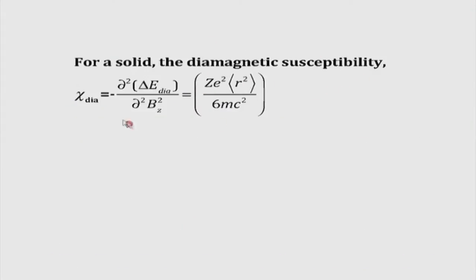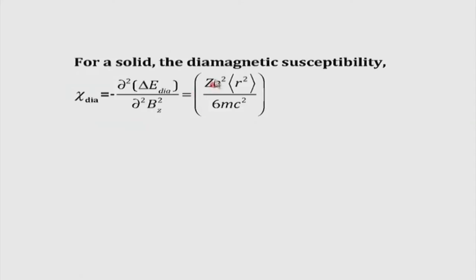Diamagnetism is a phenomenon present for every orbit whether completely filled or not — this is the first point to keep in mind. The diamagnetic susceptibility can be found by taking the second derivative of the energy shift with respect to B_Z. This gives a susceptibility determined by the number of electrons Z and ⟨R²⟩ — the expectation value of R² calculated for the atom. This is the diamagnetic susceptibility expression, and with the proper sign, it is negative.